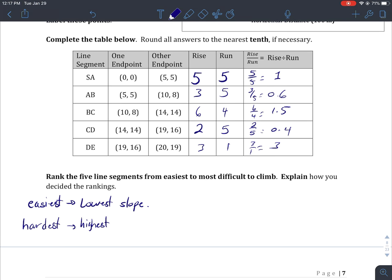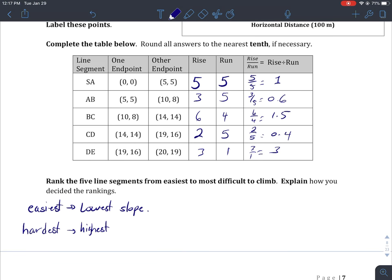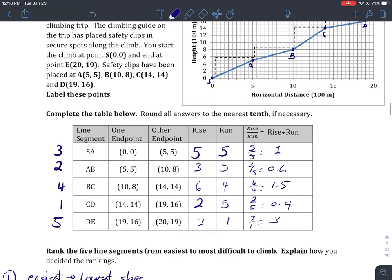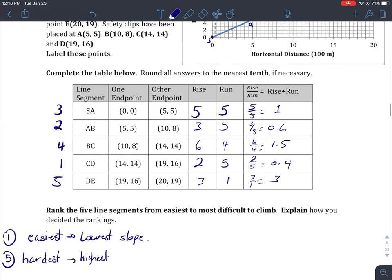We'll rank them with the easiest being one and hardest being five. So the lowest number first: DE is 1, then AB is 2, then CD is 3, BC is 4, and the last stretch is the most difficult to climb.